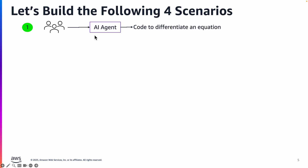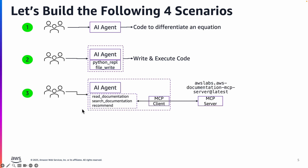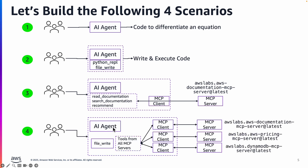So let's build the following four scenarios. The first scenario: the AI agent will just write code to differentiate an equation. The second is where we pass tools that will have the ability to actually execute the code it has written. The third is we'll build an agent that uses an MCP server called AWS Labs DocumentationServer, getting the three tools it exposes — read documentation, search, and recommend — so that the agent can search AWS documentation on any service. And last but not least, we will make it more powerful by actually interacting with multiple MCP servers. With that, let's get into the notebook.